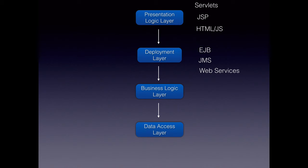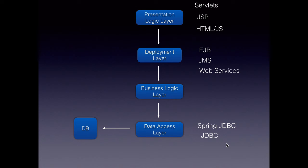Finally, the data access layer, which does all the CRUD database work, comprises JDBC — Java Database Connectivity — which is where we all start when learning Java. We can also use wrappers like Spring JDBC, which makes writing JDBC code very easy as an abstraction layer over JDBC. Then we have JPA, the Java Persistence API from Oracle, which is an object-relational mapping API that maps database tables to our Java objects.